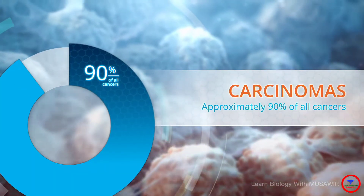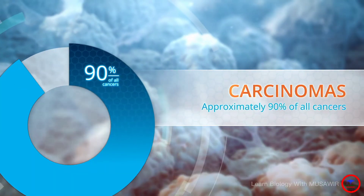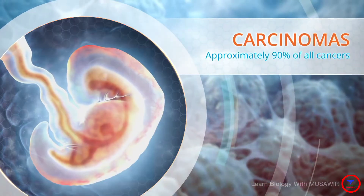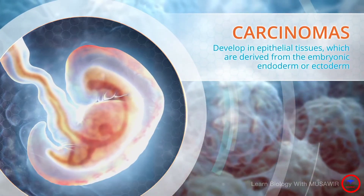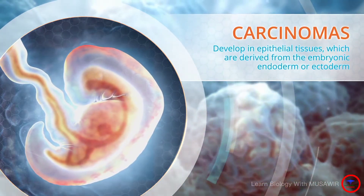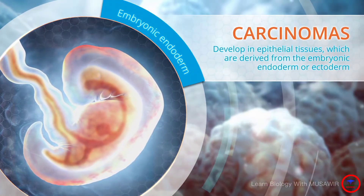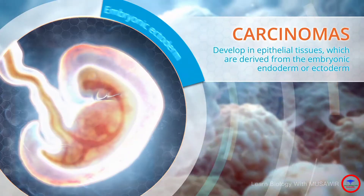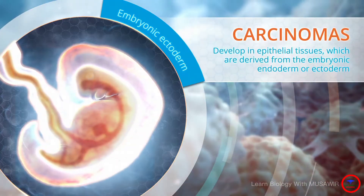Approximately 90% of all cancers are carcinomas. These are cancers that develop in epithelial tissues which are derived from the embryonic endoderm or ectoderm.